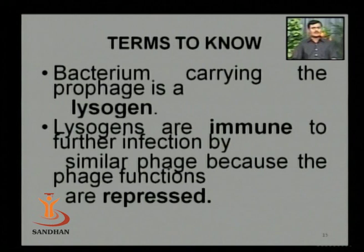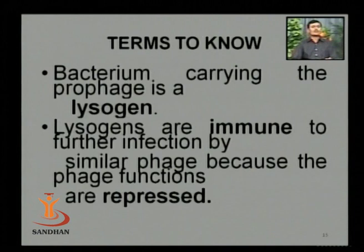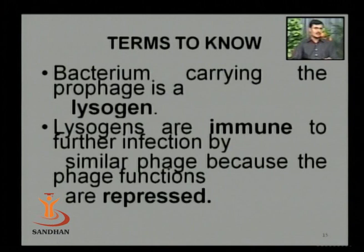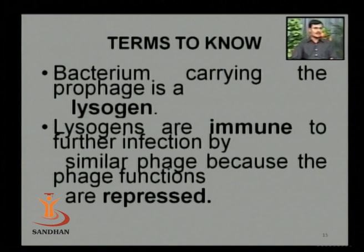Once a bacterial cell is infected with a bacteriophage, it becomes immune to further infection by a similar type of phage. That same bacterial cell cannot be re-infected by similar phages.